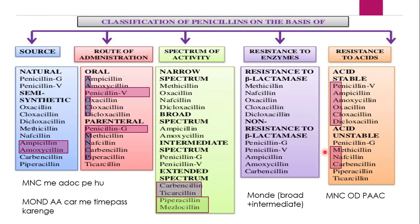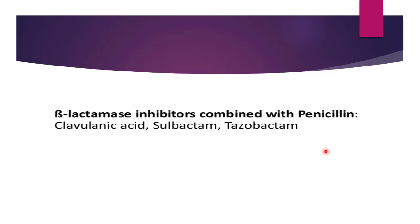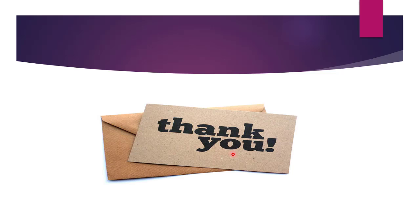So Bunty is in MNC, on ad hoc basis, doing time pass — and with this time pass, we are through with the classification of penicillins. Some other penicillins are combined with beta-lactamase inhibitors — enzymes that hydrolyze penicillins. Examples are Clavulanic acid, Sulbactam, and Tazobactam. With this we finish the classification of penicillins. Thank you and stay tuned for more videos on beta-lactam antibiotics.